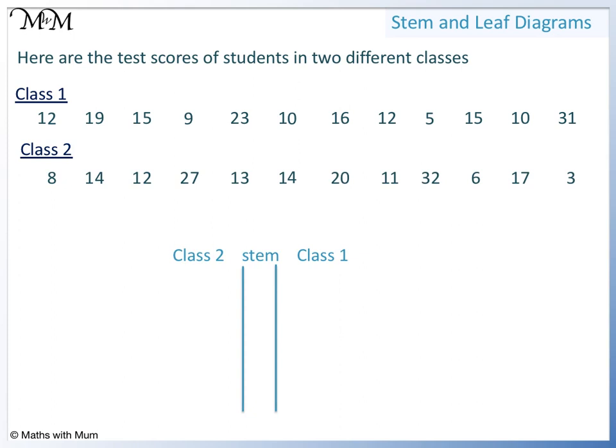We start with the class 1 data. We arrange the data so that it gets larger as we move out from the stem. We only enter one digit for each number, so the tens digit will go in our stem. We will start with the numbers with 0 tens, looking for the smallest numbers first. We have 5 and 9.